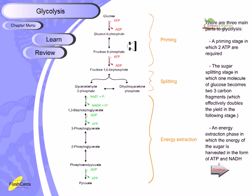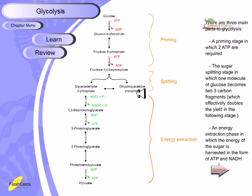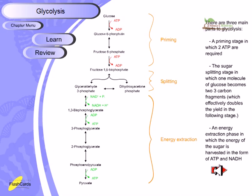There are three main parts of glycolysis. The first is called the priming or energy investment step, where ATP is consumed to drive the reaction. The second is the sugar splitting stage, where one glucose molecule becomes two three-carbon fragments. The third is the energy extraction phase, where ATP and NADH are produced — NADH being a very energetic molecule that can produce ATP via the electron transport chain.